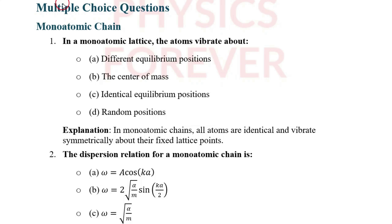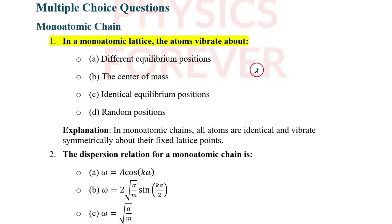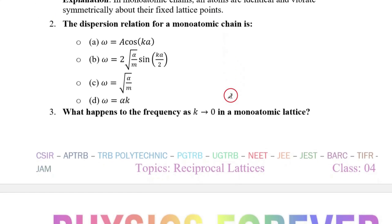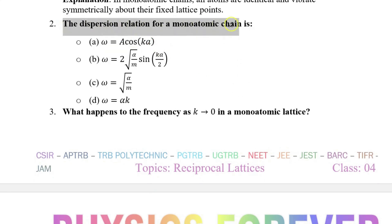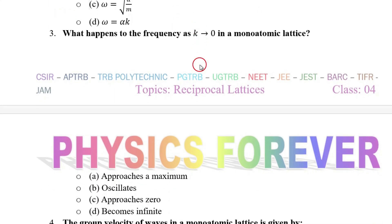Now moving to MCQ questions on the monoatomic chain. Question 1: In a monoatomic lattice, atoms vibrate about — the correct answer is C: identical equilibrium positions. Question 2: The dispersion relation for the monoatomic chain — the correct option is B. Question 3: What happens to the frequency when k equals zero in a monoatomic lattice? As discussed in theory, the correct option is: frequency approaches zero.